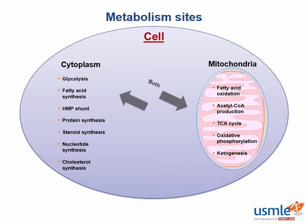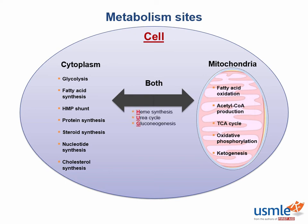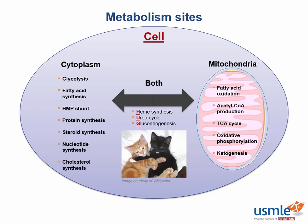Reactions that take place in both the mitochondria and the cytoplasm include heme synthesis, the urea cycle, and gluconeogenesis. An easy way to remember these is: 'it takes two to hug.' If you look closely at these individual pathways, you'll see that part of the pathway occurs in one location while the rest occurs in a separate location.